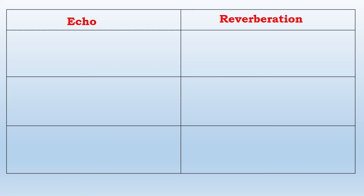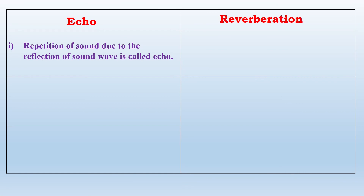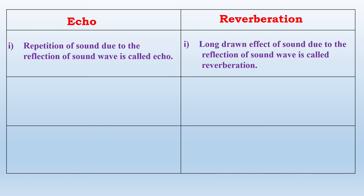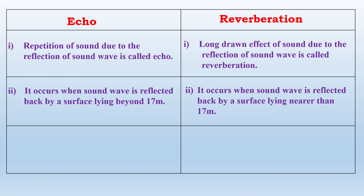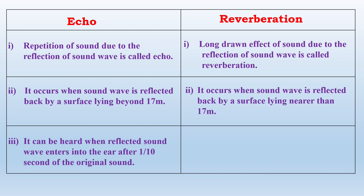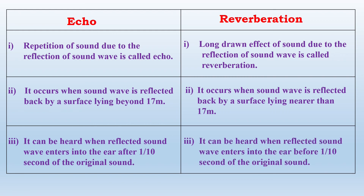Looking at the comparison table: Echo is the repetition of sound due to reflection of sound waves, while reverberation is the long drawn effect of sound due to reflection. Echo occurs when the surface is beyond 17 meters; reverberation occurs when the surface is nearer than 17 meters. Echo is heard when the reflected sound enters the ear after 1/10 second of the original sound; reverberation is heard when the reflected sound enters the ear before 1/10 second of the original sound.